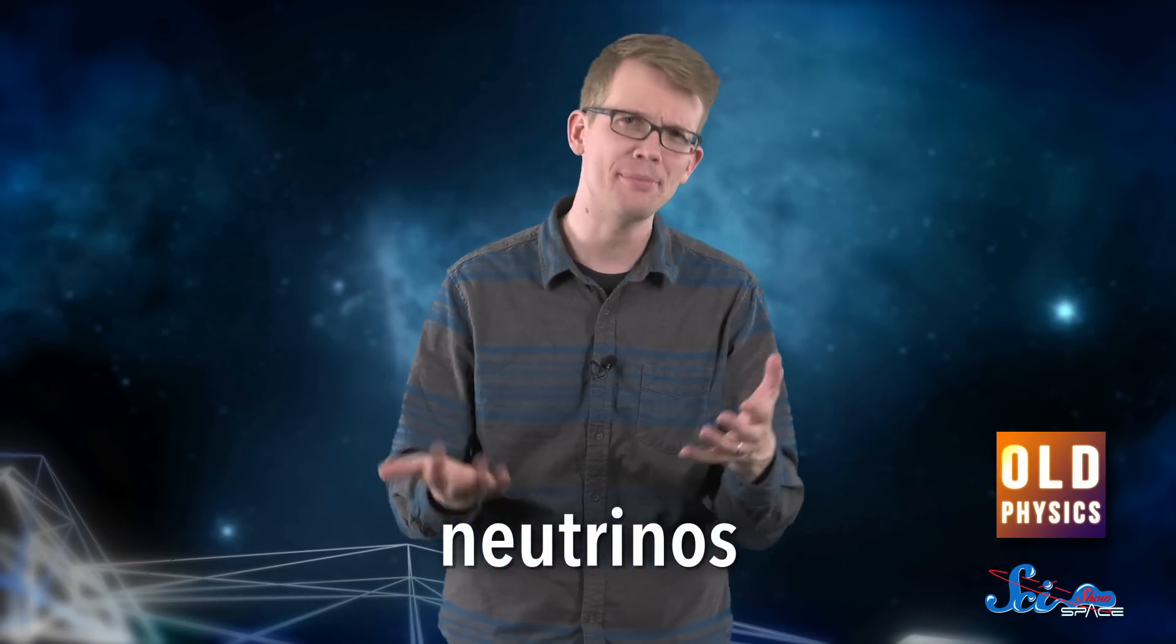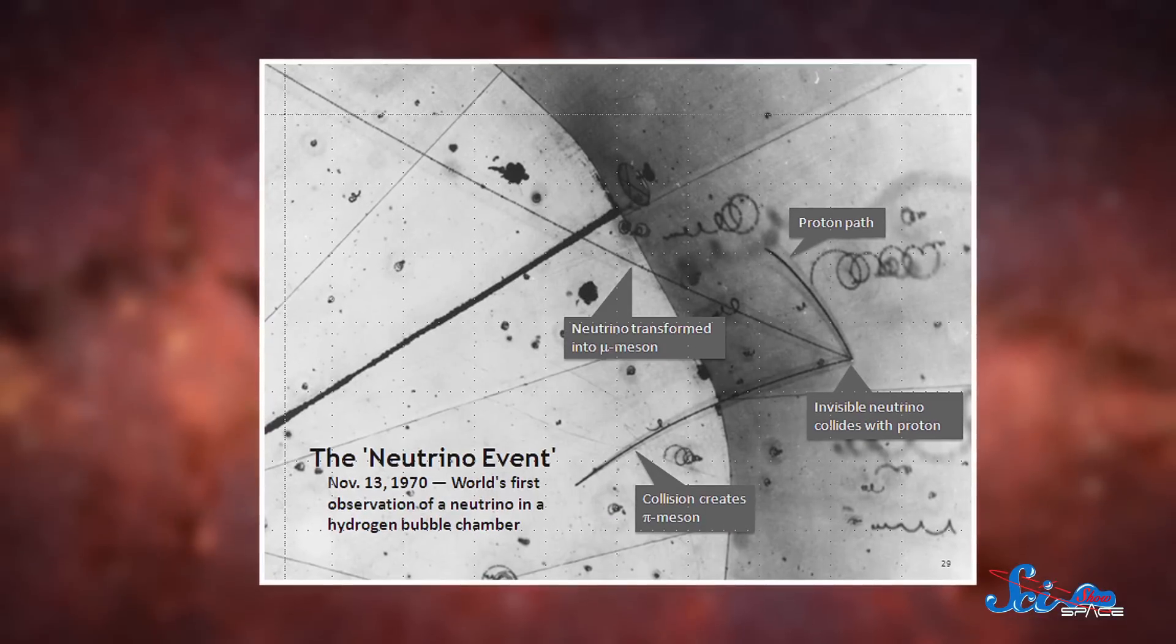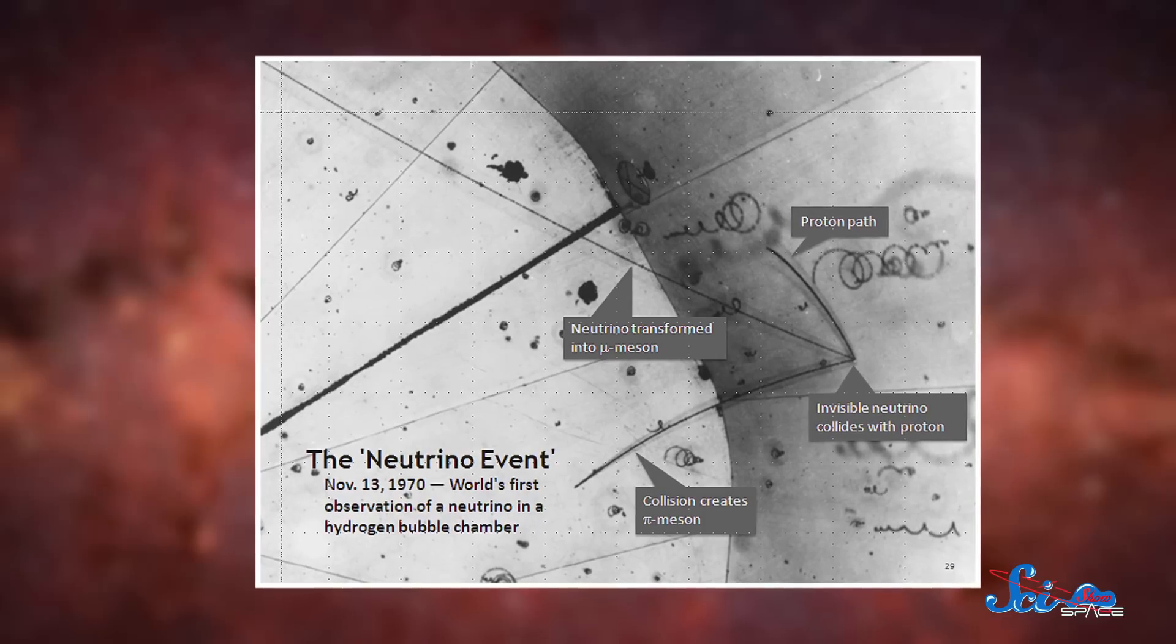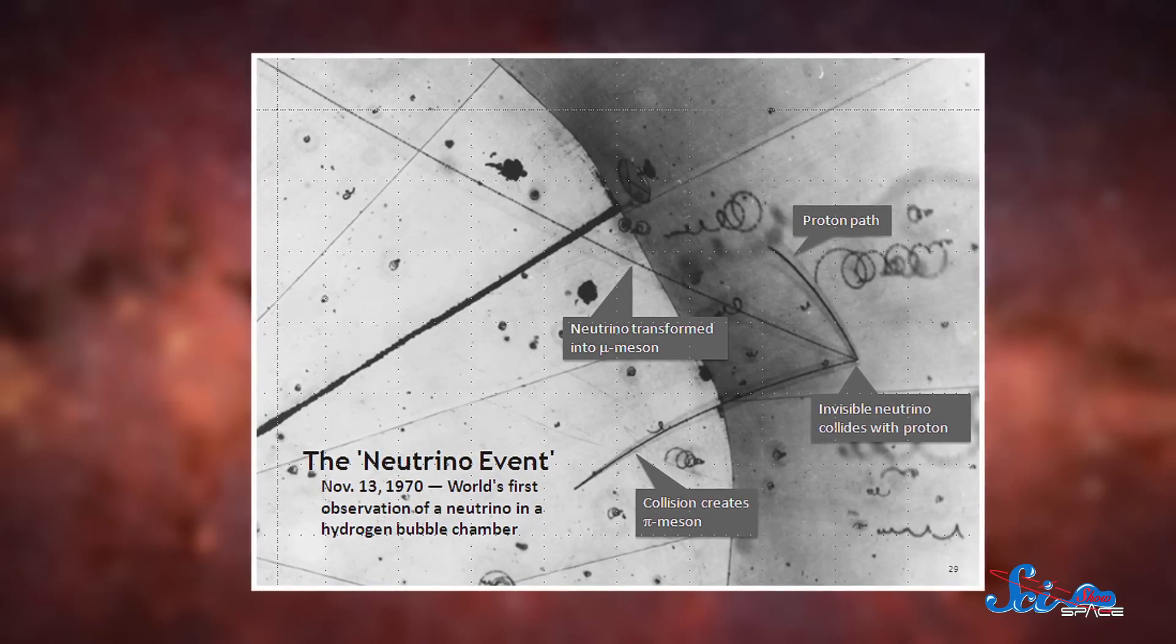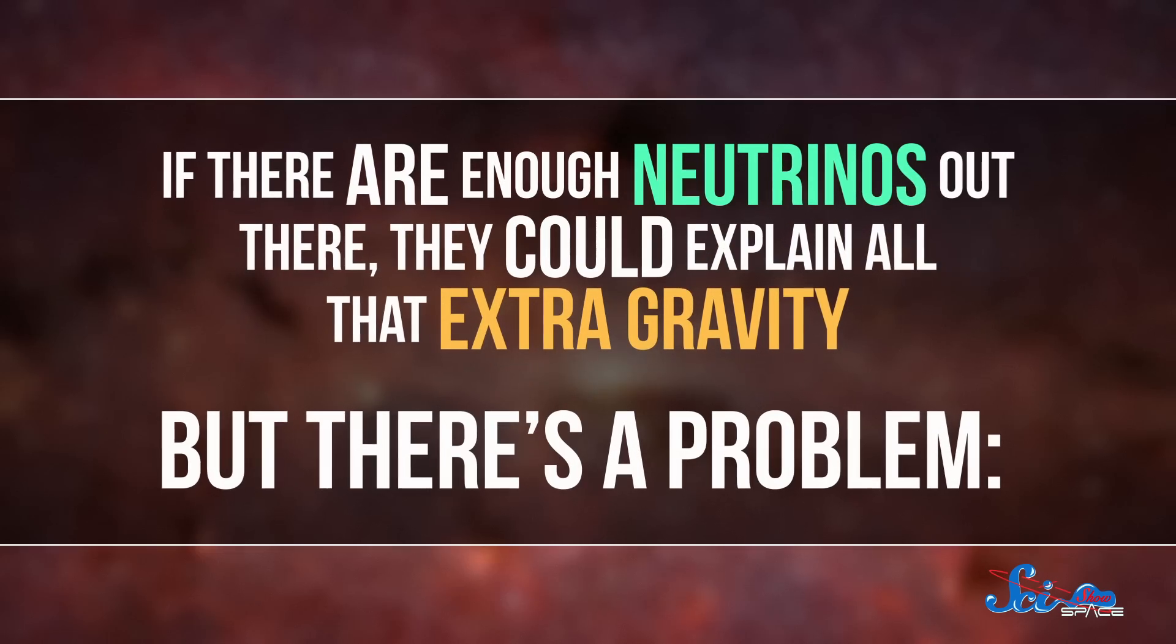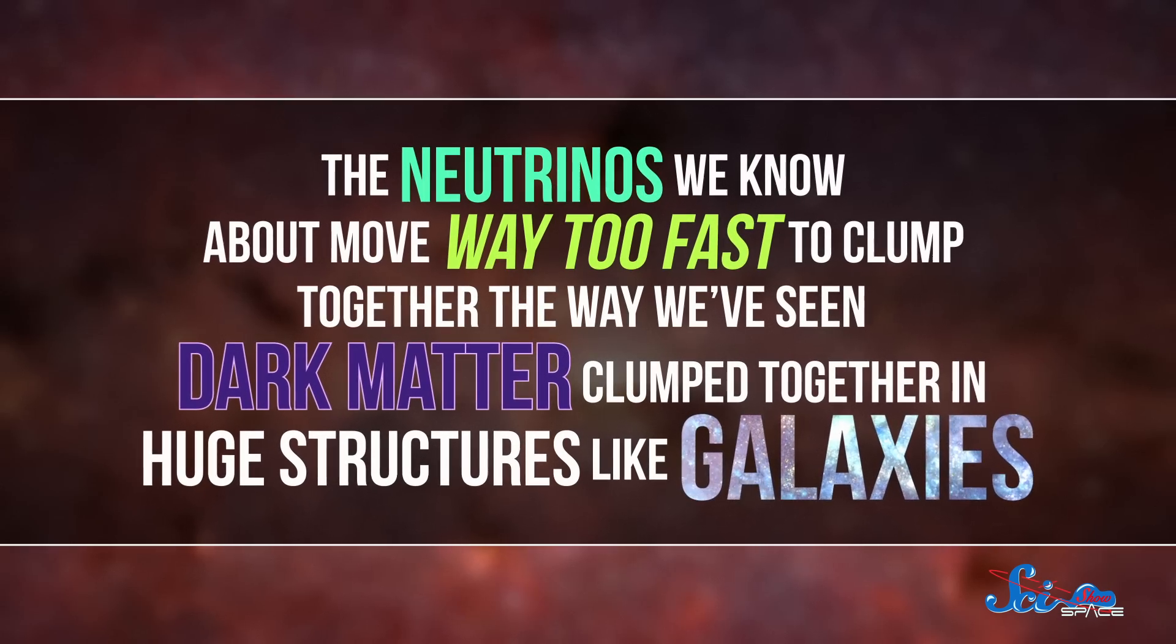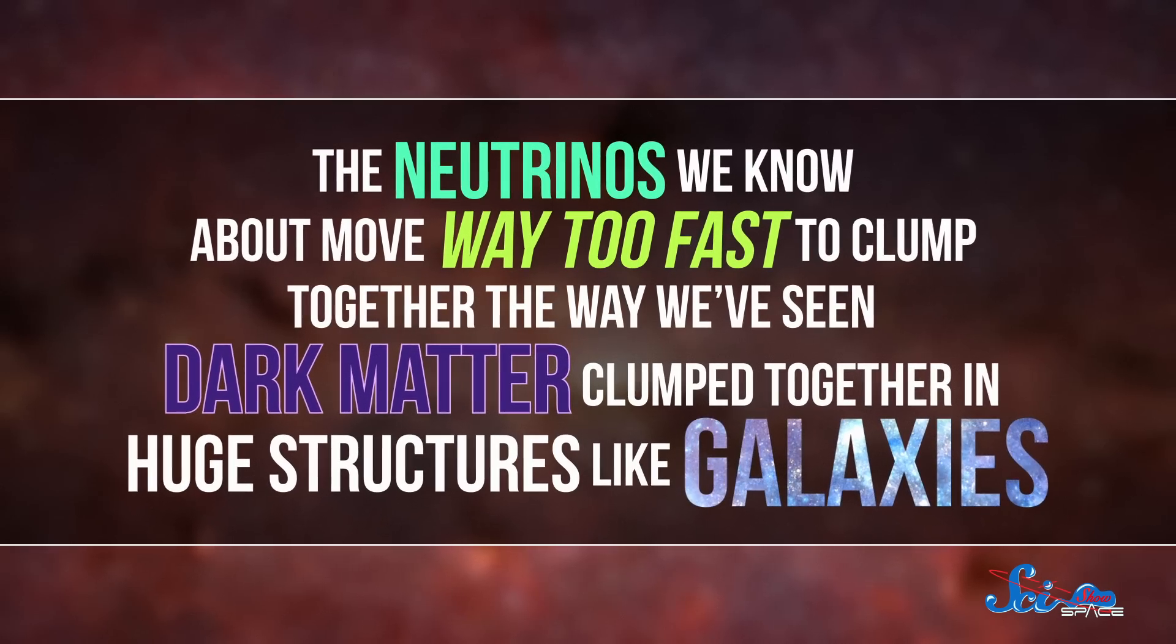Other people in the old physics camp used to think dark matter was made of neutrinos — ghostly, subatomic particles that come out of processes like the nuclear reactions that happen in stars. Neutrinos don't produce light, and they barely interact with other matter at all, which made them a great candidate for dark matter. They also have almost no mass. But even though each individual neutrino is incredibly light, the mass would add up, as there are a lot of them. If there are enough neutrinos out there, they could explain all that extra gravity. But there's a problem. The neutrinos we know about move way too fast to clump together the way we've seen dark matter clump together in huge structures like galaxies.